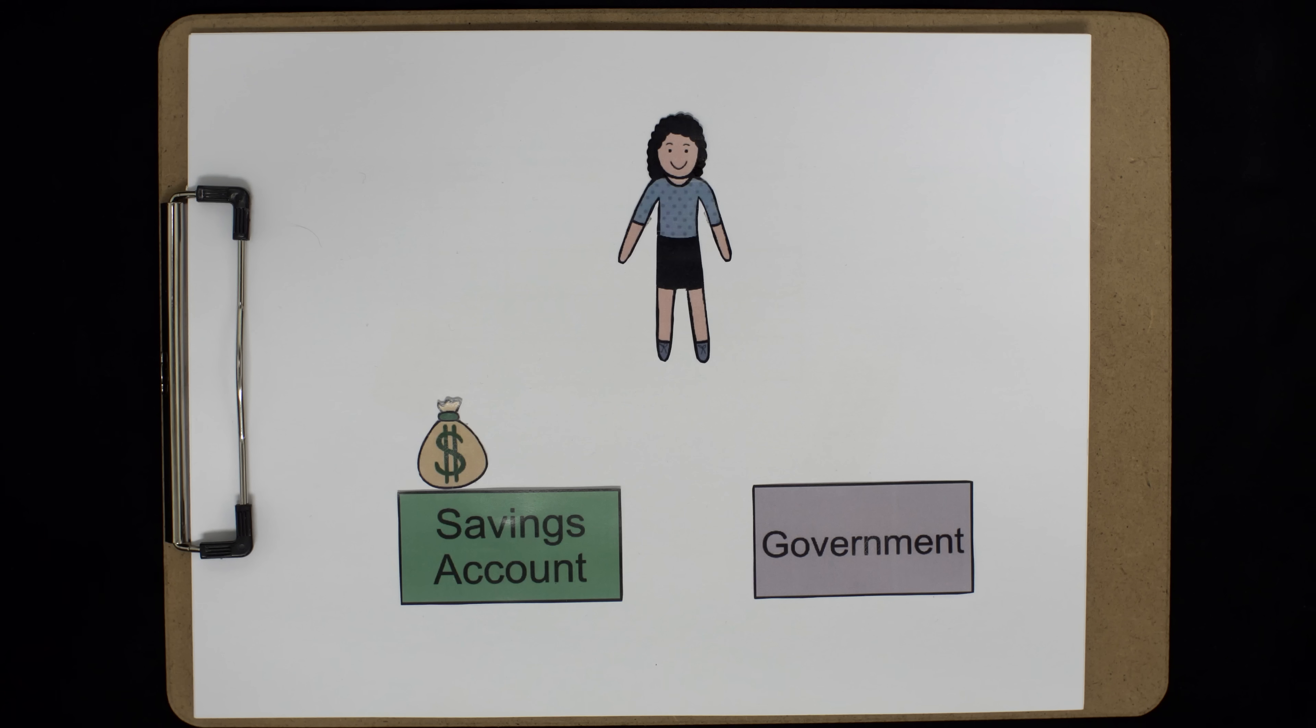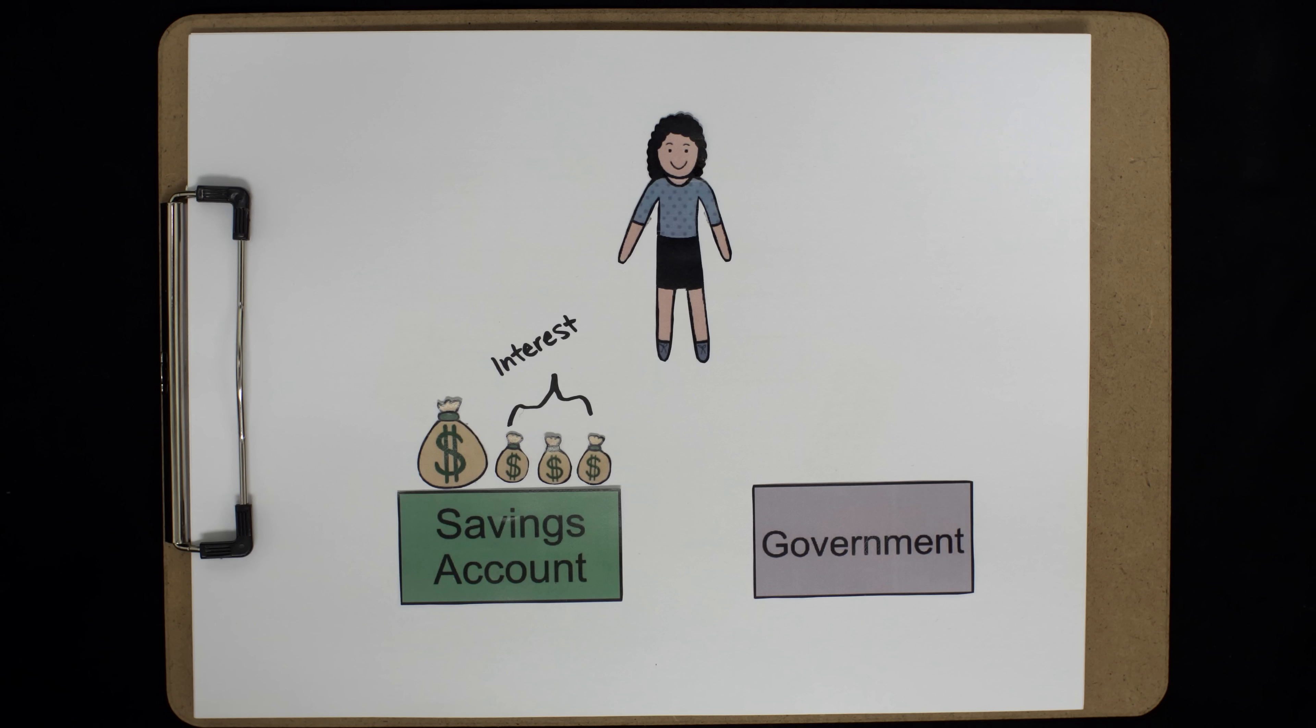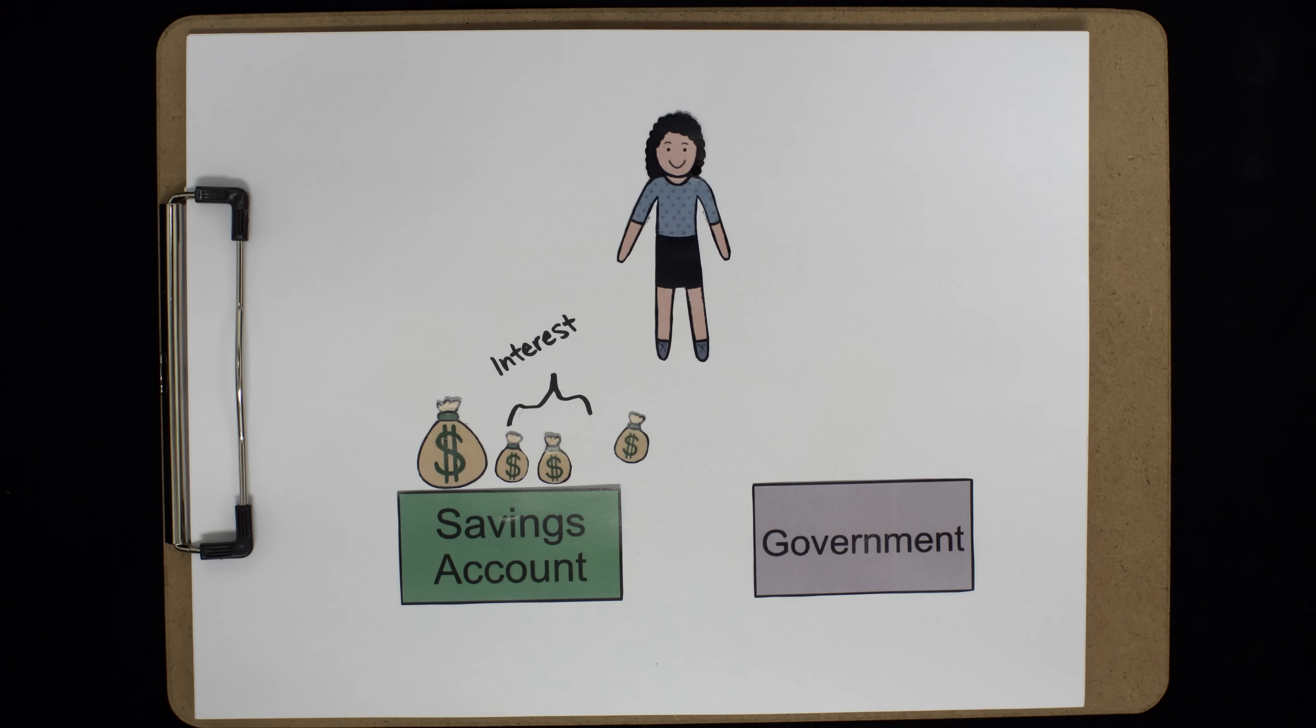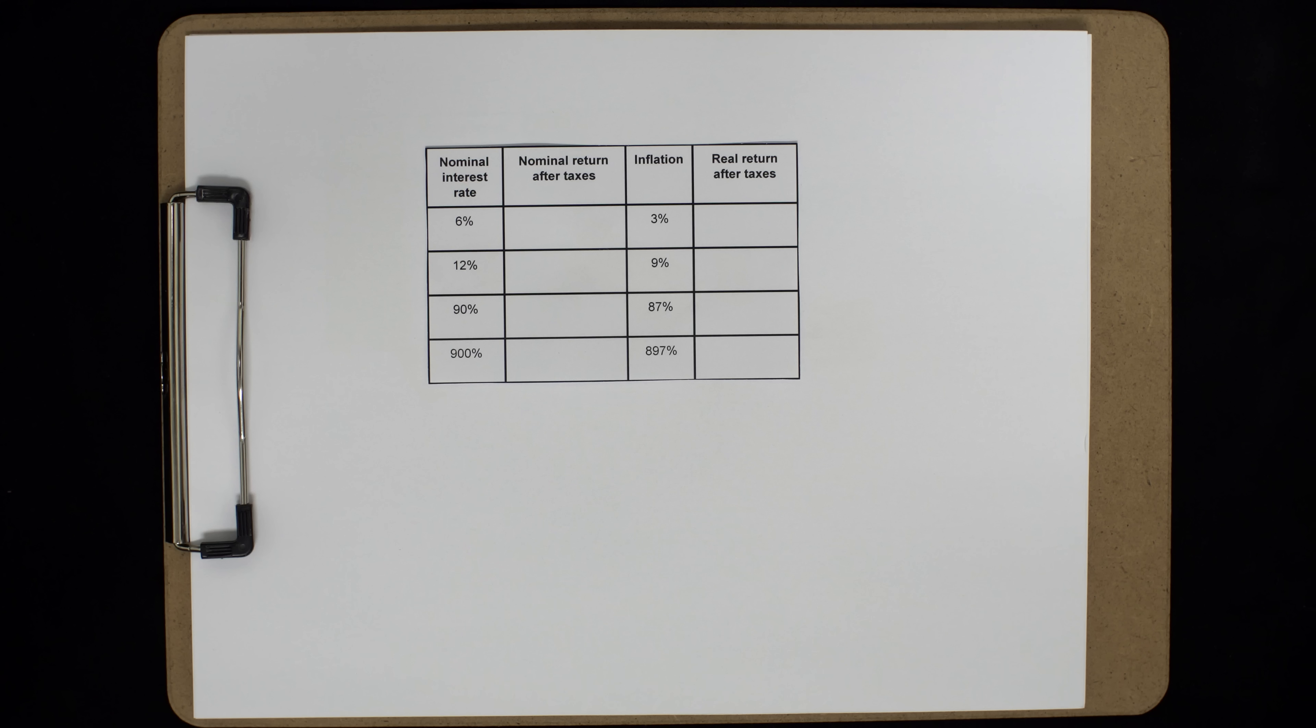We know that the government taxes any nominal interest you earn on a savings account, so for this scenario, let's assume a realistic 33% tax rate. Now, if you're rational, you should care mostly about your real interest rate after taxes when deciding how much to save.